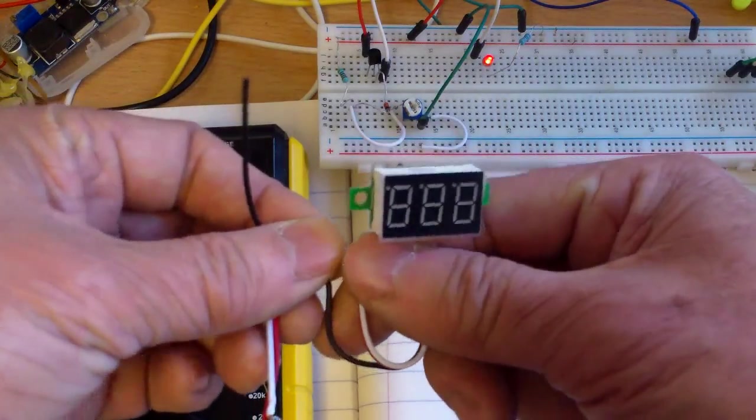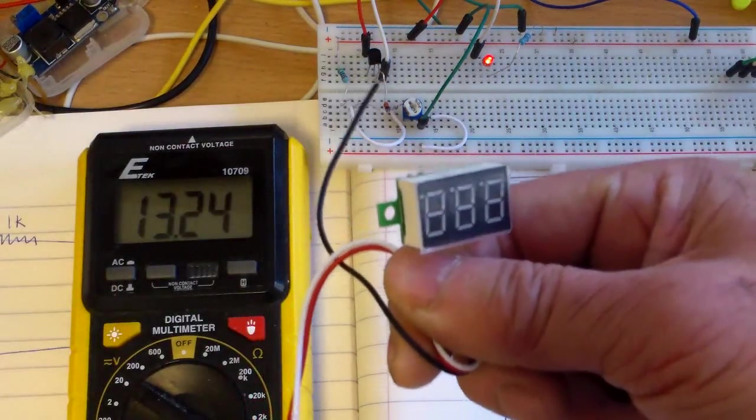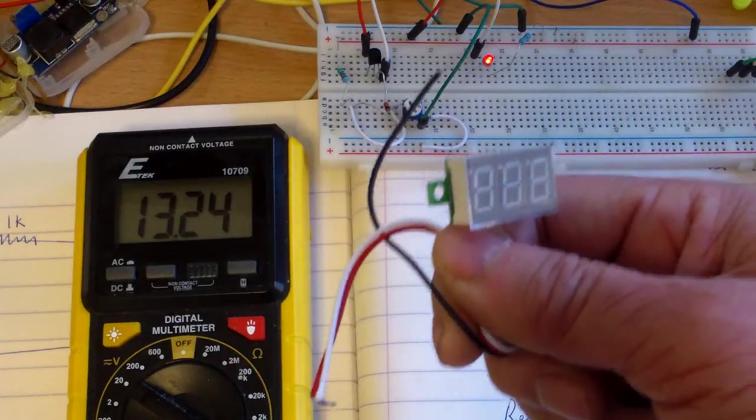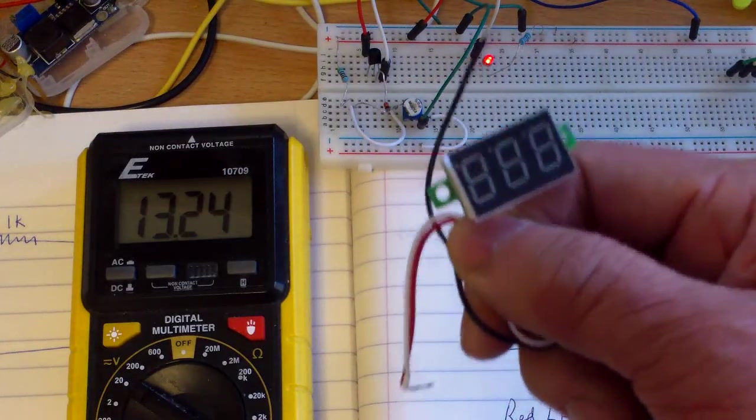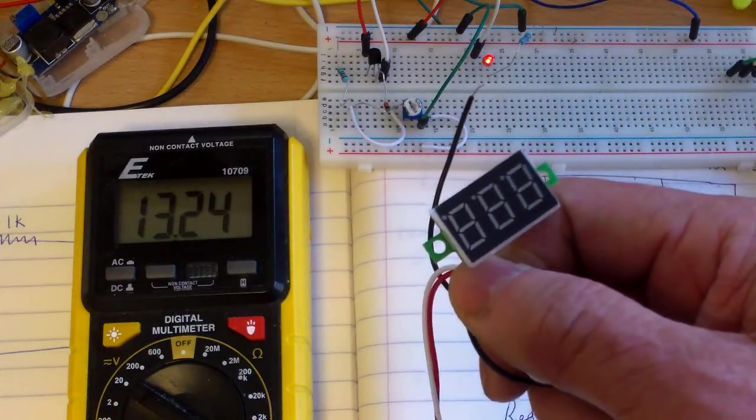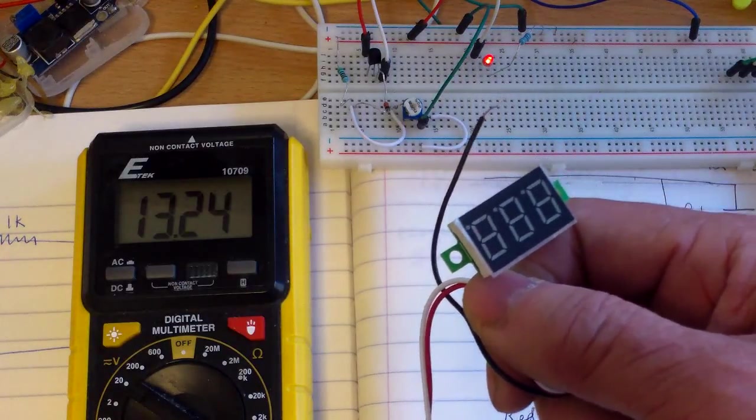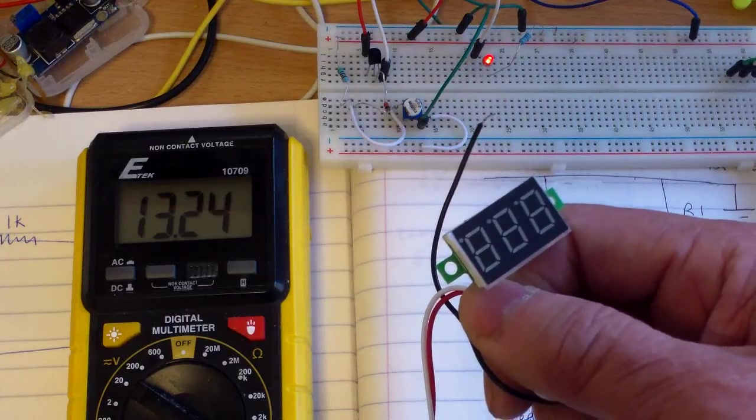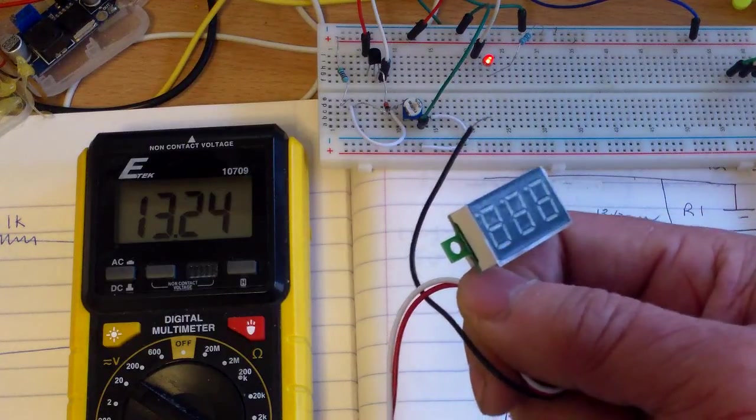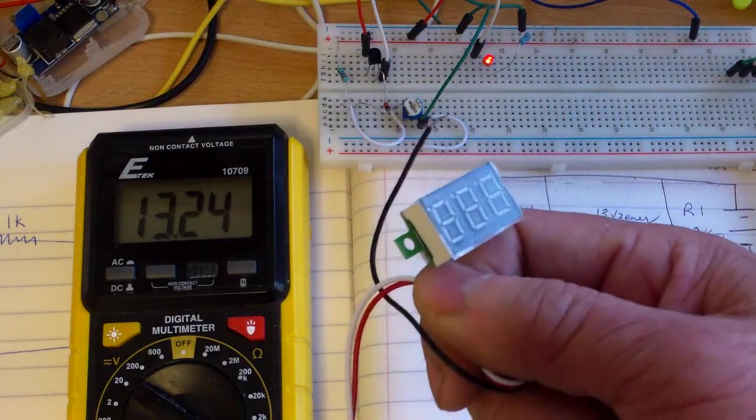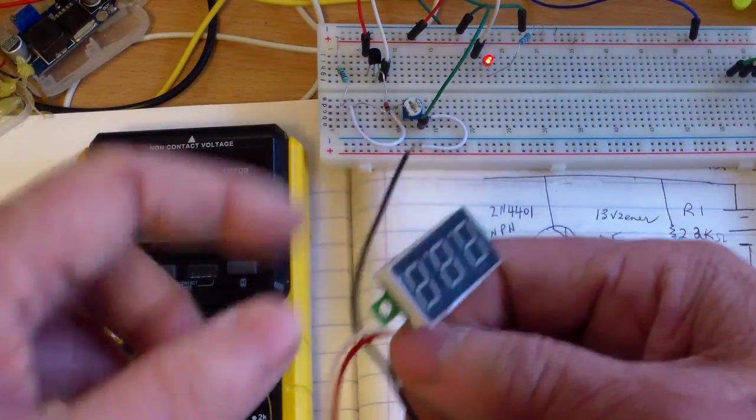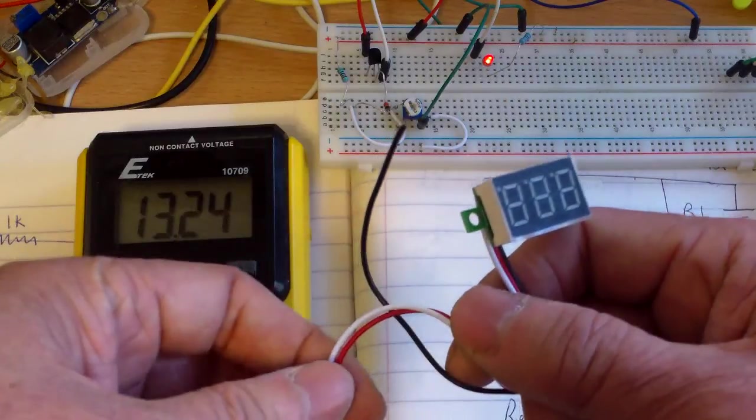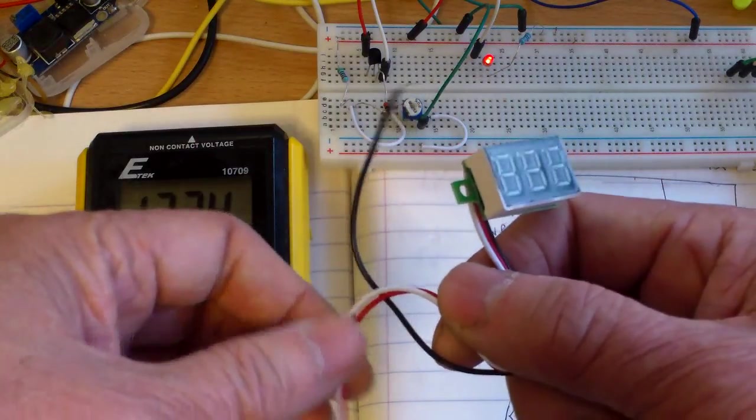With the two wires you are measuring the voltage of the battery but you are also using the battery as a power source to power the voltmeter, and they are probably a little bit less accurate that way.